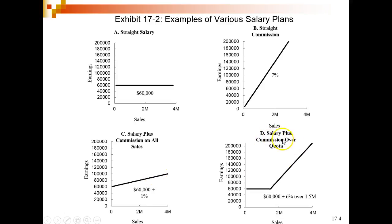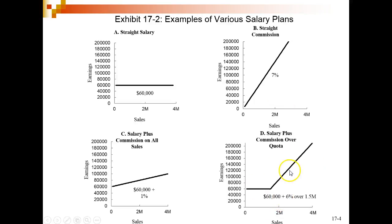Salary plus commission over quota: you get sixty thousand dollars, but there's a quota you must hit to earn that base — say, 1.5 million dollars in sales. Once you've essentially made your salary back for the company, you start earning commissions at around six percent. Your percentage is lower than straight commission, but you're still going to make a lot of money, and you have the security of the base salary. This is another approach you'll see fairly often.